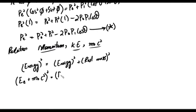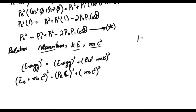The momentum of the electron is PE. Using the relation p = E/c, we can write the electron's energy in terms of momentum into speed of light. So, kinetic energy squared plus rest mass energy squared plus the cross term gives us the expanded form PE²c² plus m₀²c⁴.